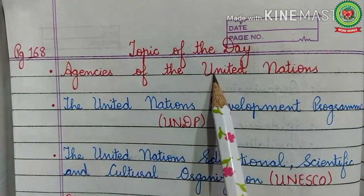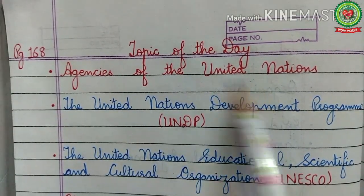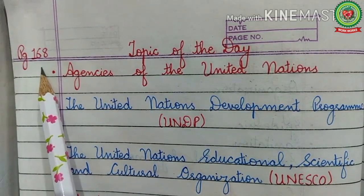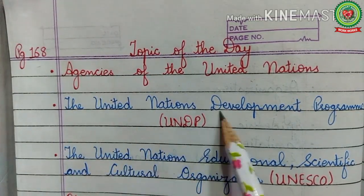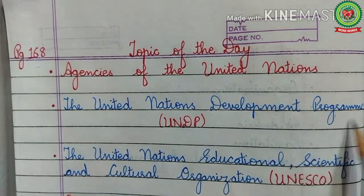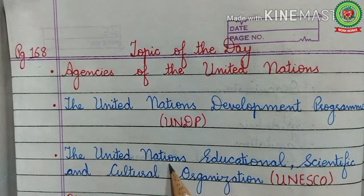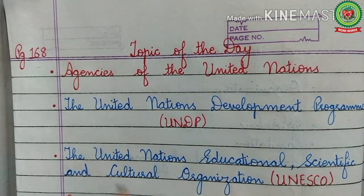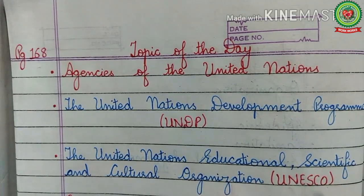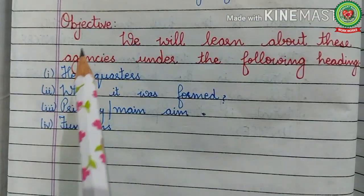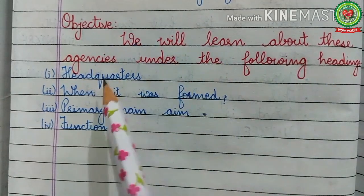Tell any two functions of WHO. What is the primary aim of UNICEF? The topic of today's lesson means we are going to discuss page 168 of the book, in which we will discuss the United Nations Development Program (UNDP) and the United Nations Educational, Scientific and Cultural Organization (UNESCO). The objective is to learn about these agencies under the headings: headquarters, when it was formed, primary aim, and functions.